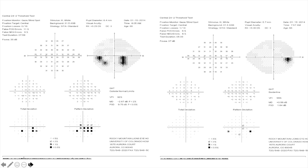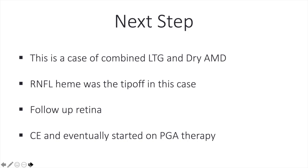Visual field examination shows non-distinct inferior visual field defects on the right side. The left side shows central paracentral visual field defects that could be attributed to dry AMD. This is a case of combined LTG and dry AMD. The disc hemorrhage was the tip-off in this case. The patient had follow-up with retina, eventually had cataract extraction, was started on latanoprost therapy, and remains well-controlled.